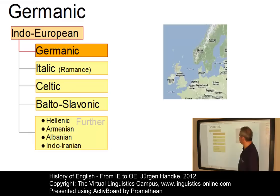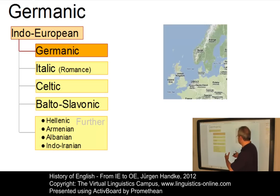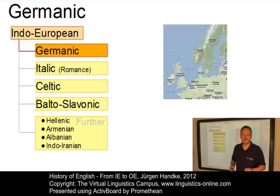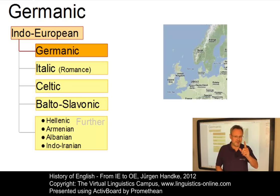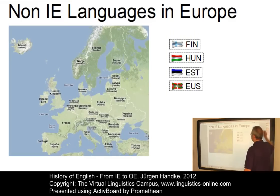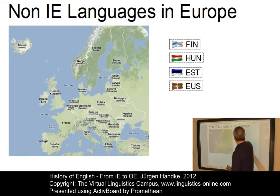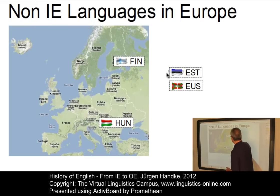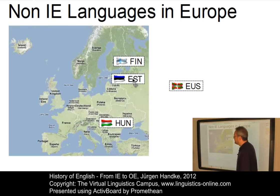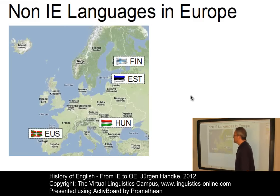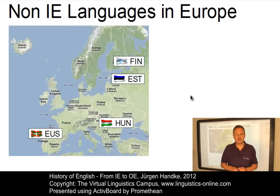Other families alongside Germanic are Italic, also referred to as the Romance languages, Celtic, Balto-Slavonic — today's languages would be Russian, Czech, Polish and so on — and further families such as Hellenic, Armenian, Albanian or Indo-Iranian. Earlier I asked you about non-Indo-European languages in Europe. Here they are: Finnish, Hungarian and Estonian — three Uralic languages — and Basque, one of the oldest languages of the world, whose classification is unclear; some linguists claim it is an independent language.